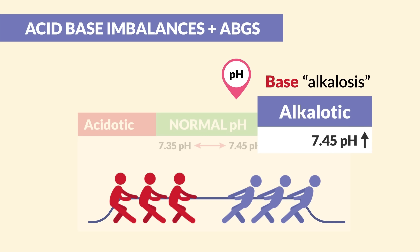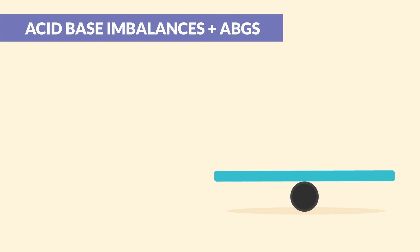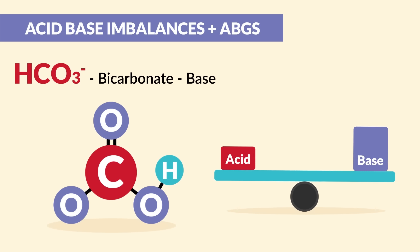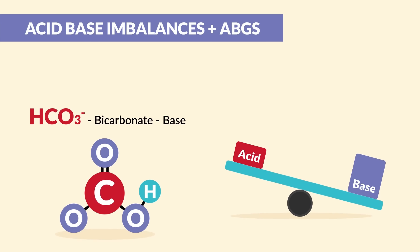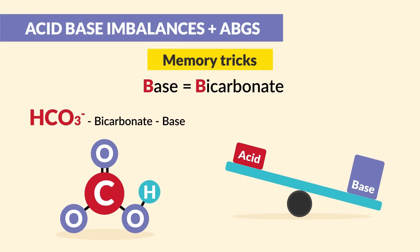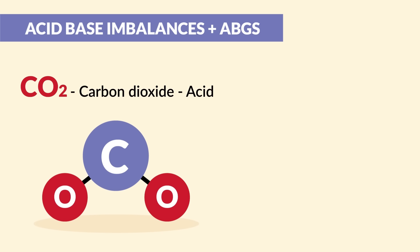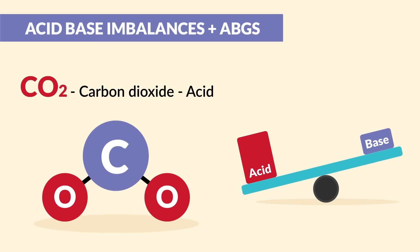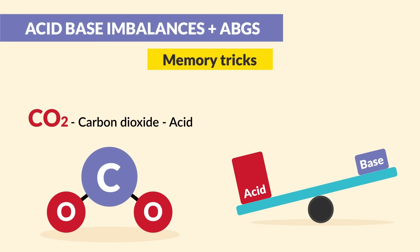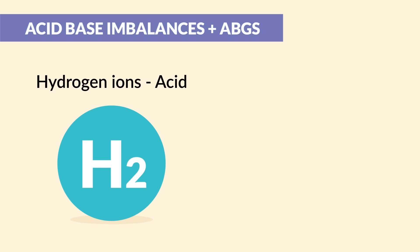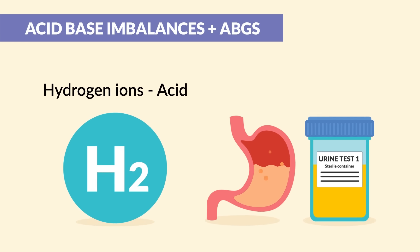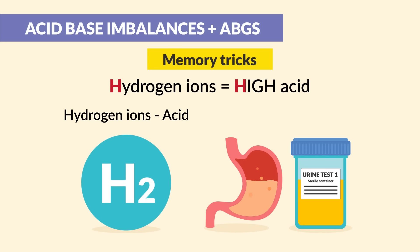Here's where it gets confusing. The key players that keep us in balance: HCO3, known as bicarb, is our base — it helps push the body into alkalosis. Memory trick: think of the double B's — base equals bicarb. CO2, our carbon dioxide, is our acid, pushing the body into an acidotic state. Memory trick: think carbon dioxide is carbon diacid, since too much CO2 pushes us into acidosis. Hydrogen ions are a form of acid found in stomach acids and urine — just think hydrogen ions is high acid.